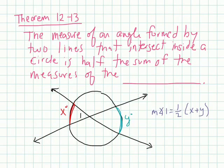Alright, welcome to Geometry 8-4. We're looking at angle measures and segment lengths. The first theorem we're starting with says this: the measure of an angle formed by two lines that intersects inside a circle is half the sum of the measures of the intercepted arcs.